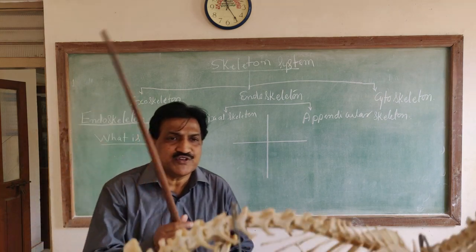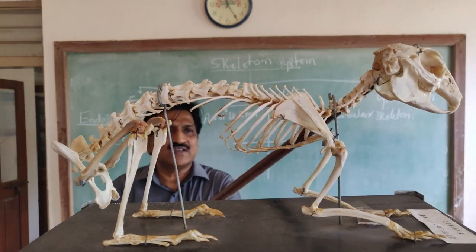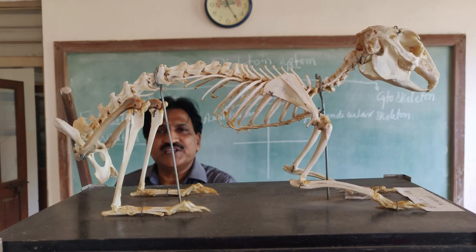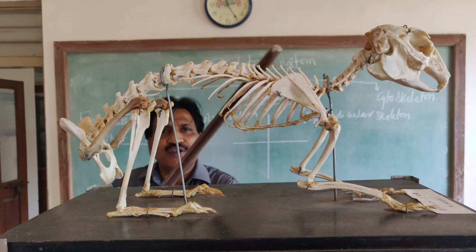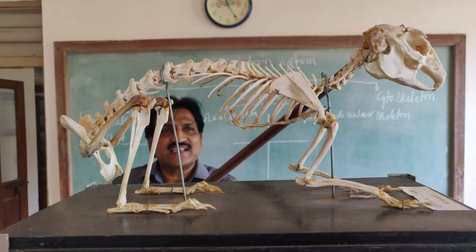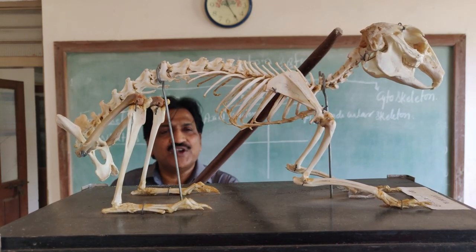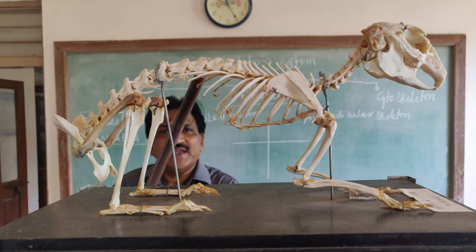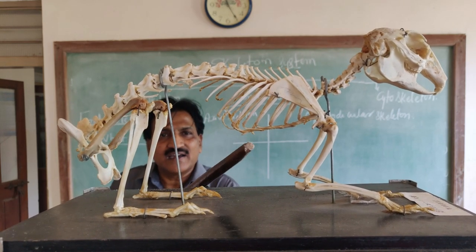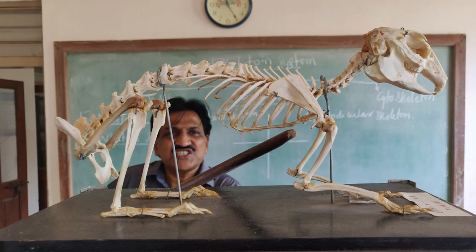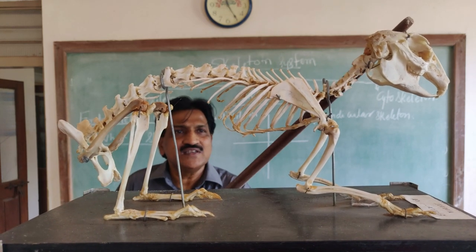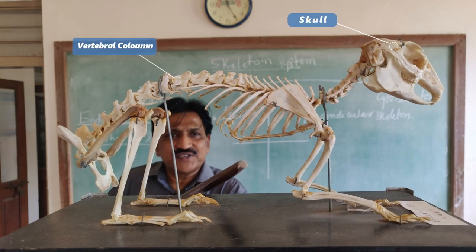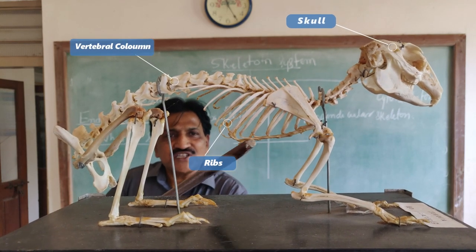In case of the rabbit, the skeletal system starting from the head up to the tail is the vertical axis. This vertical axis contains the skull, vertebral column, ribs, and sternum.